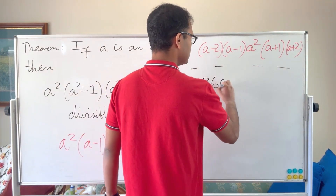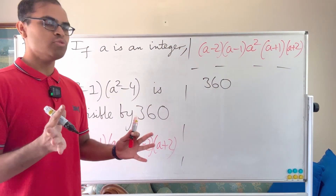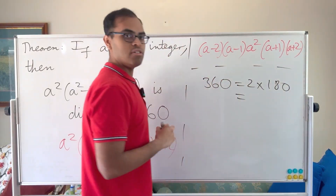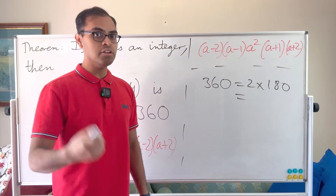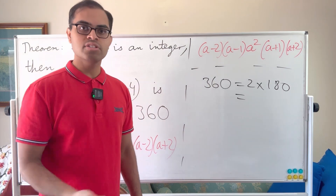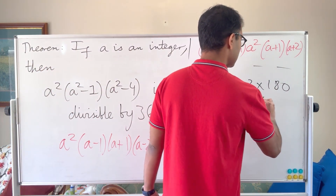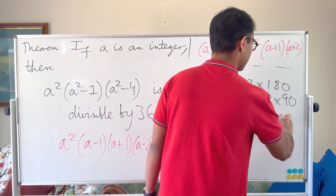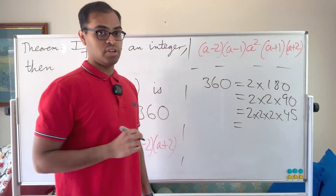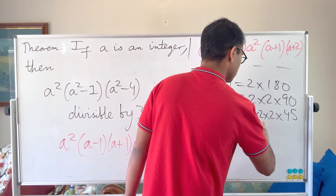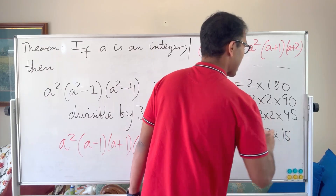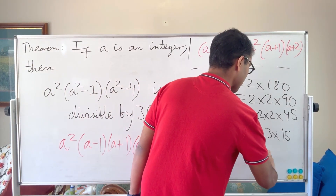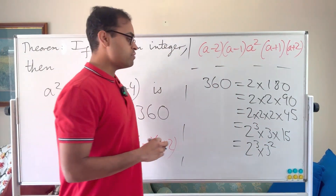Basically, 360 — if you keep dividing by 2, you get 2 times 180, then 2 times 2 times 90, then 2 times 2 times 2 times 45. Now 45 is divisible by 3 — that's 3 times 15 — so we get 2 cubed times 3 times 15. And again, 15 is divisible by 3, so maybe you saw that 45 is divisible by 9. You get 2 cubed times 3 squared, and 15 is 3 times 5, so times 5.